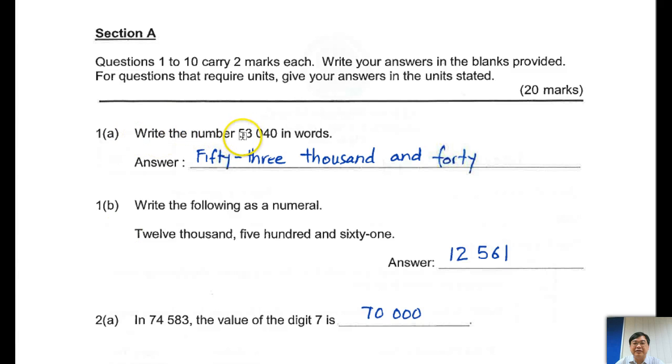Write numbers 53,040 in words. Remember this way, 53,040. Spelling, this is not F-O-U-R-T-Y. And make sure you have it hyphenated. Next one B, write the following as a numeral, it means from words becomes number. This is the answer, I believe you know by now how to do this.